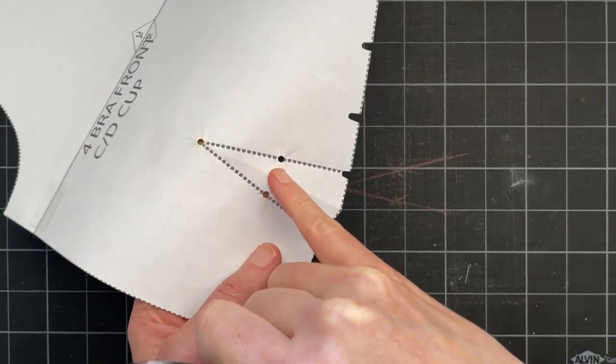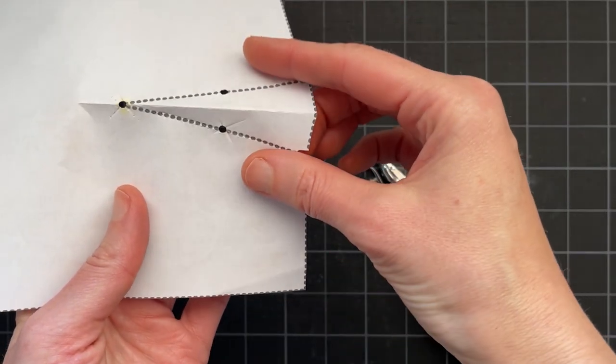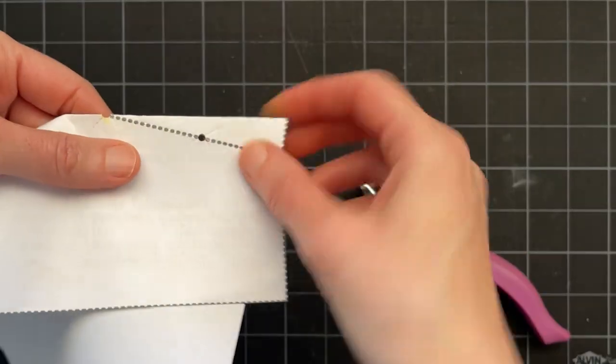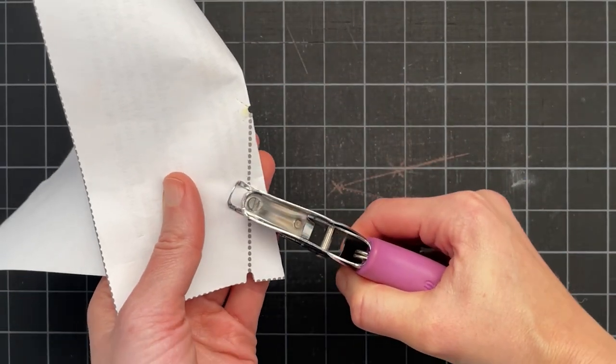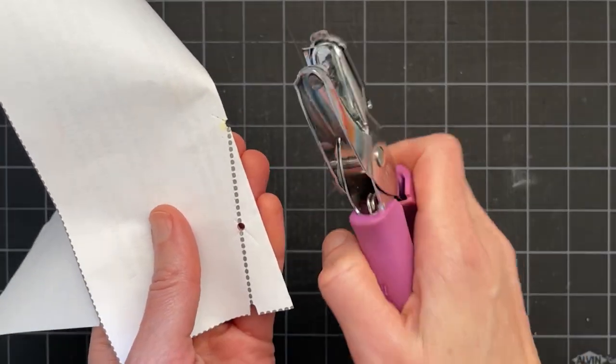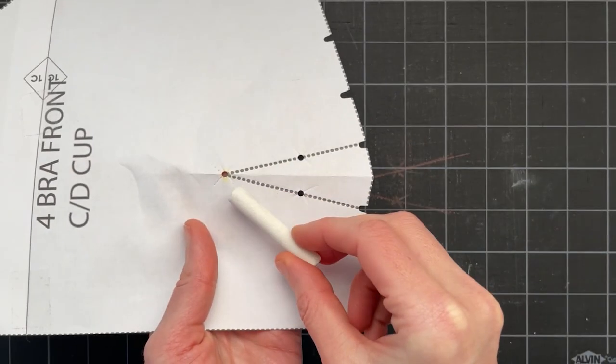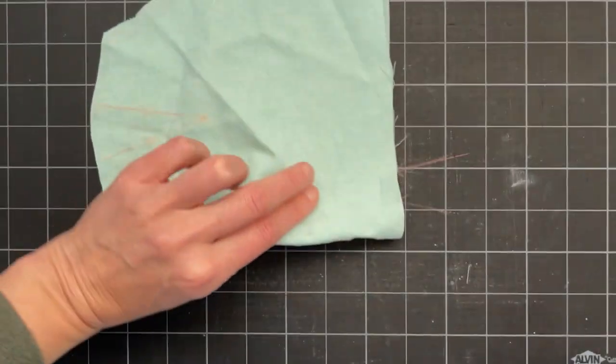Next I punch holes for the dots in the dart. To do that I fold my pattern in half along the dart and then I punch holes in these dots. I've already cut them in this pattern and then I punch a little hole right at the end as well. Then I will use my chalk to mark those dots on my fabric. Let's see it in action.